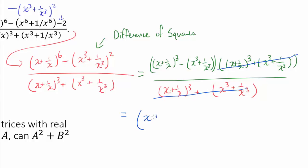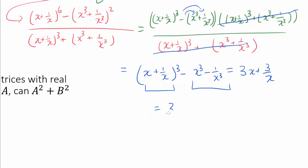And what we have left is x plus 1 over x cubed minus x cubed minus 1 over x cubed when I distribute this negative sign. And when you expand this and you take these away, we simply get 3x plus 3 over x. And this thing is 3 times x plus 1 over x.